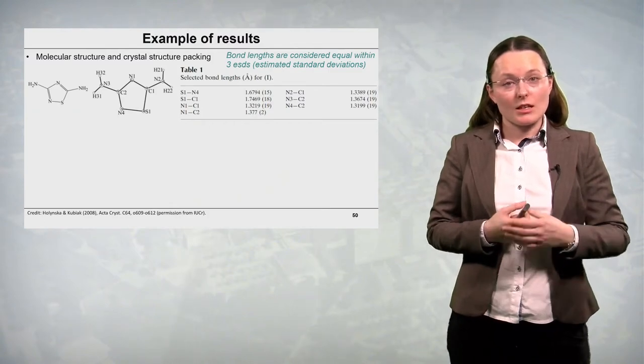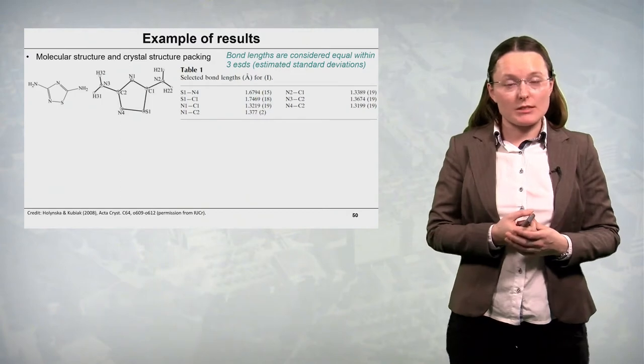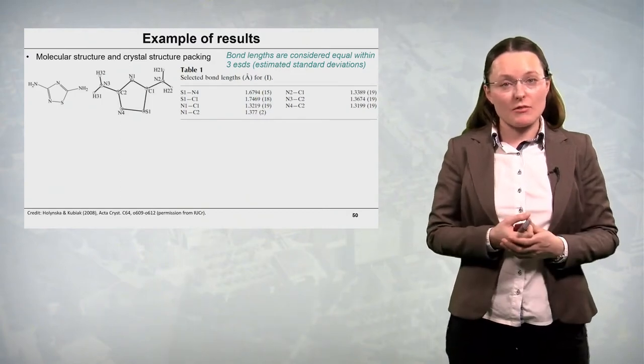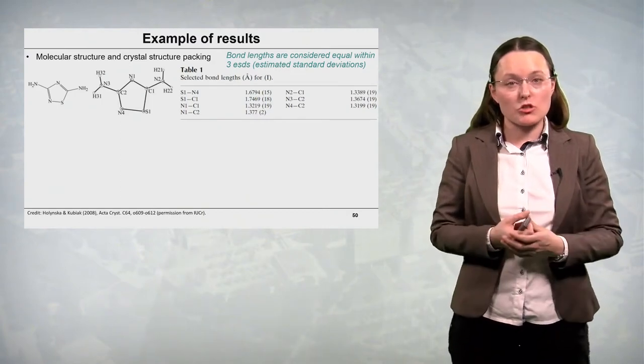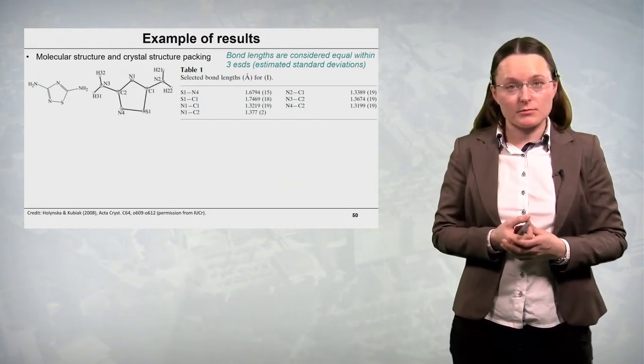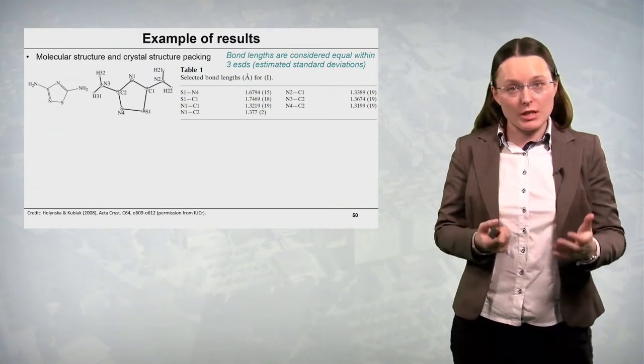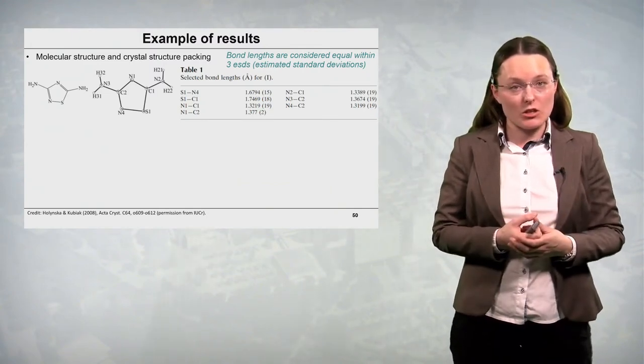And in the round brackets we have some idea about the so-called estimated standard deviations, the error with which these bond lengths are known from the experiment. And the bond lengths are considered to be equal within three estimated standard deviations.